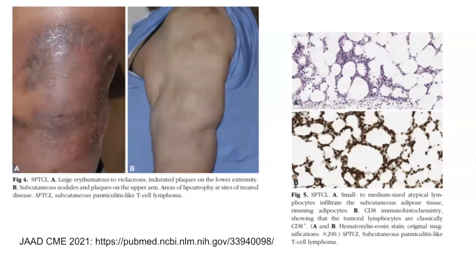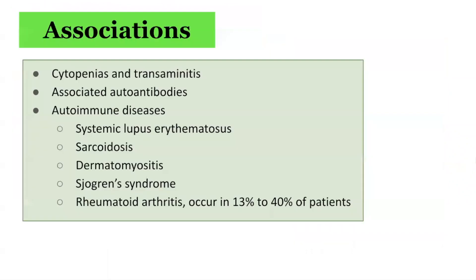The histological appearance is demonstrated on the right-hand side. In terms of the associations, subcutaneous panniculitis-like T-cell lymphoma can be associated with cytopenias and transaminitis in the liver function enzyme tests. We can have associated autoantibodies with autoimmune diseases, including systemic lupus erythematosus, sarcoidosis, dermatomyositis, Sjögren's syndrome, and rheumatoid arthritis, occurring in 13% to 14% of patients.